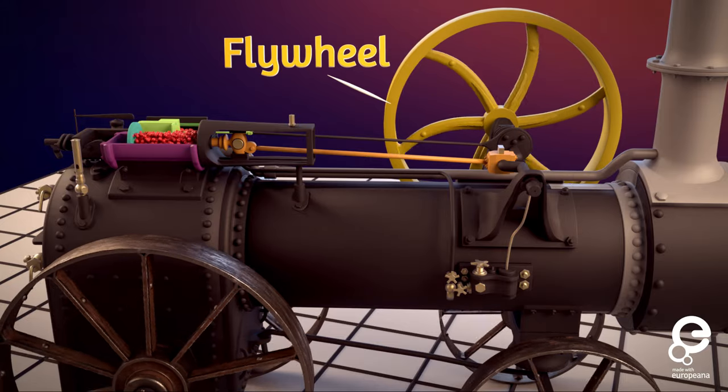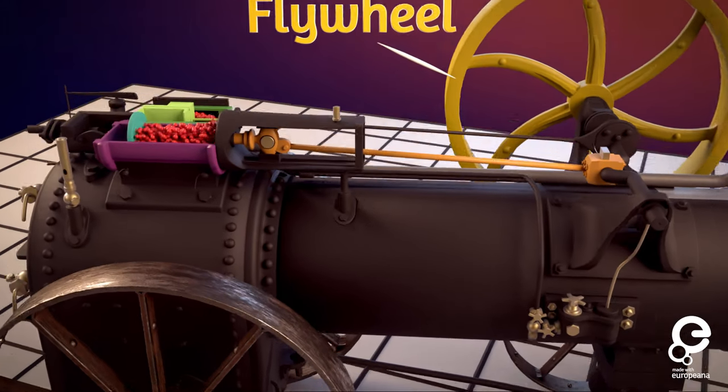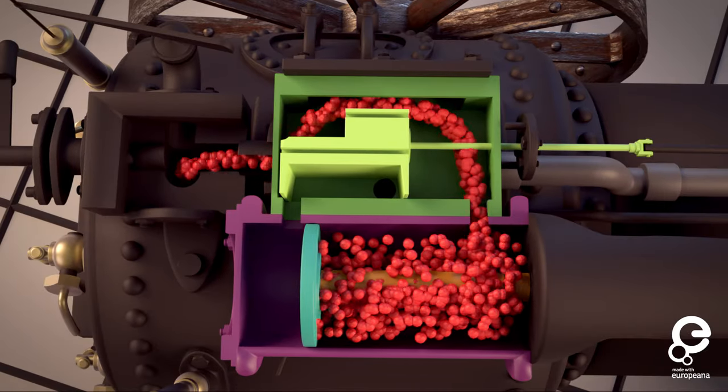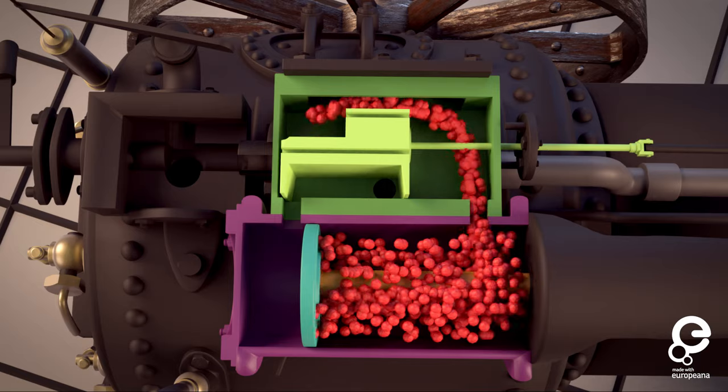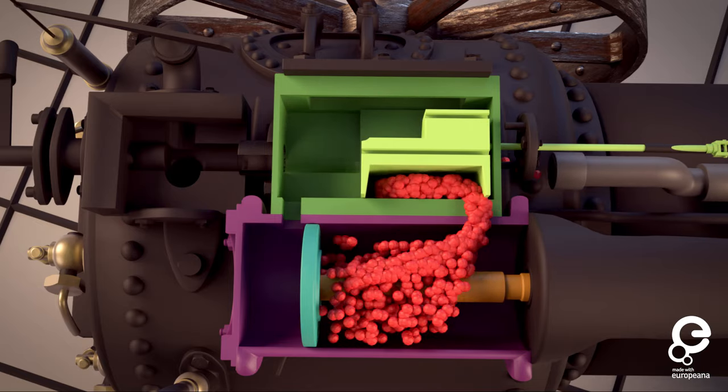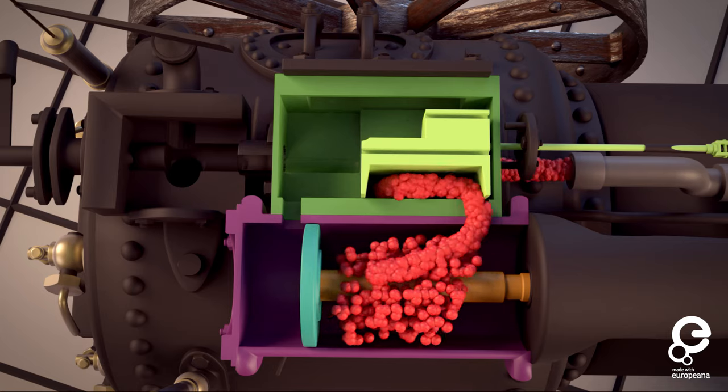We still have high pressure on this side of the piston, but the piston has reached the end of its stroke so it can't move any further, so the slide valve moves over and creates a new path for the steam to vent through the exhaust and into the open air.